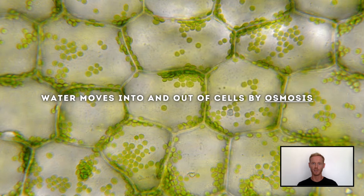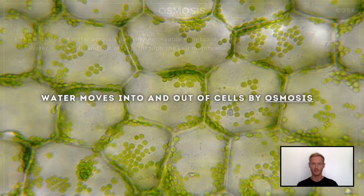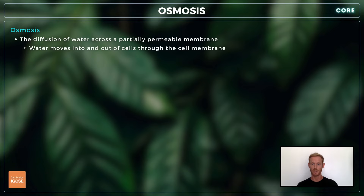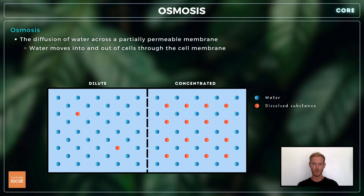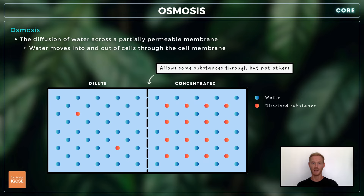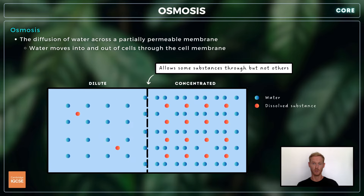Water has a diluting effect, reducing the toxicity of waste products and transporting them out of the body via the urine. In order for water to perform its functions it needs to be able to move into and out of cells, and this occurs by osmosis. Osmosis is the diffusion of water across a partially permeable membrane and is the mechanism by which water moves into and out of cells. Molecules always diffuse from an area of high concentration to an area of low concentration — that is, down a concentration gradient. A dilute solution contains more water molecules than a concentrated solution, so if a dilute solution is separated from a concentrated solution by a partially permeable membrane, water will diffuse across the membrane from the dilute to the concentrated solution.